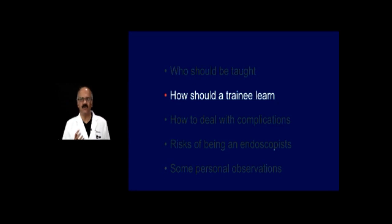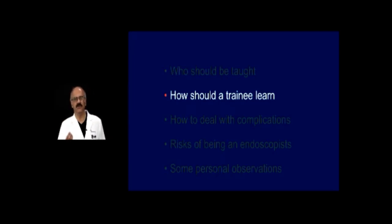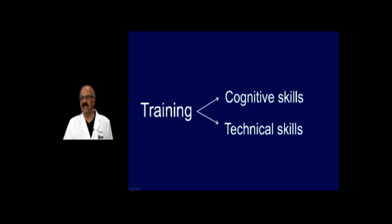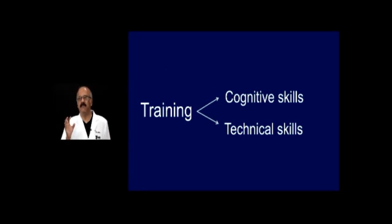The second and most important thing: how should a trainee learn? A fellow enters the three-year gastroenterology course having never touched an endoscope, probably having seen some procedures, and being basically a physician not used to handling tissues. Training for endoscopy has two components. The first is technical skills — this is the easier part to learn, as I showed you with the 10 technical things: pushing, pulling, right and left and so on. This is not difficult.